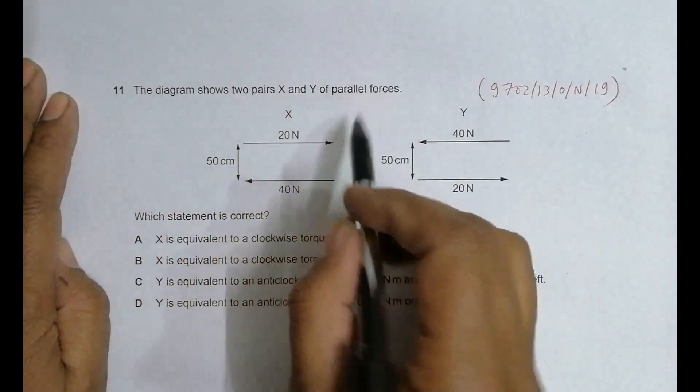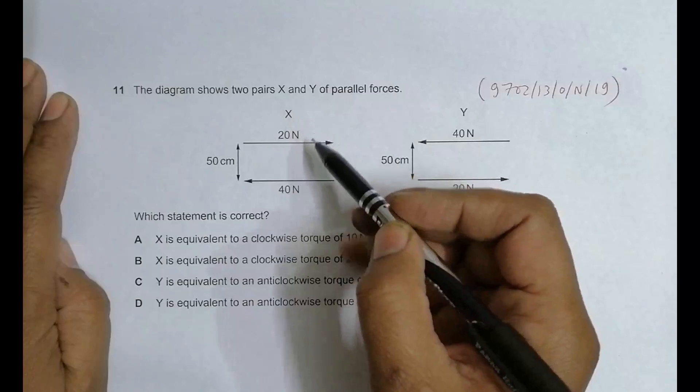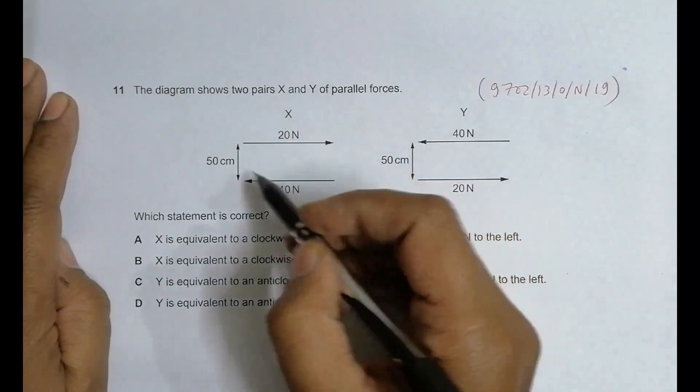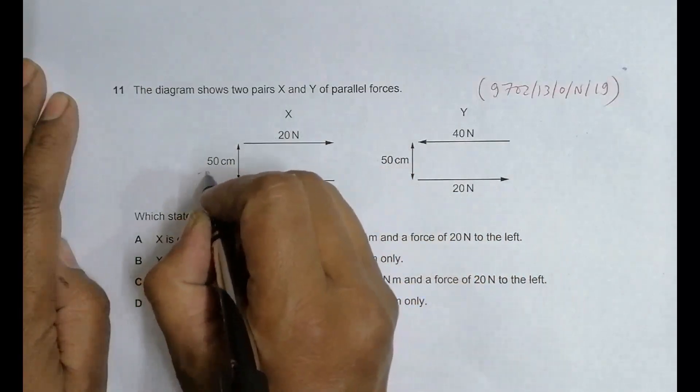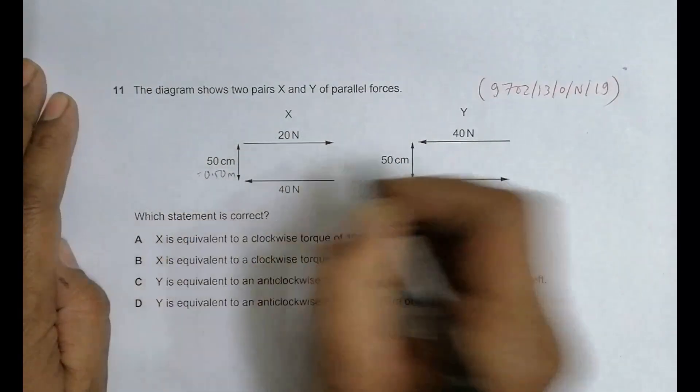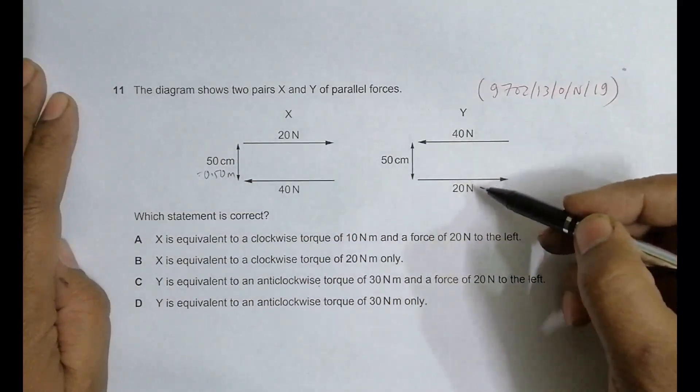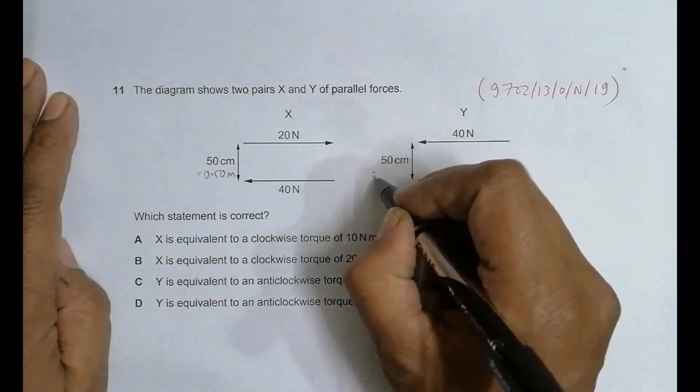X is one pair, Y is one pair. In pair X we have got two turning forces - one to the right and one to the left - separated by a distance of 50 centimeters, which is equal to 0.50 meters. In pair Y we have got 40 Newtons to the left and 20 to the right, and the distance is again 50 centimeters, equal to 0.50 meters.